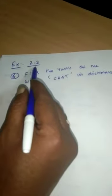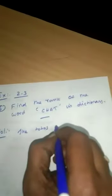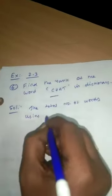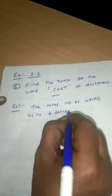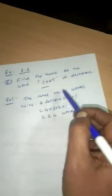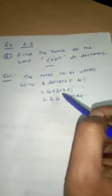Exercise 2.3. The system is the same as the rank method. Find the rank of the word CHART in the dictionary. Solution: The total number of words using these four letters is equal to four factorial, that is four into three into two into one, equal to twenty-four words we can form.